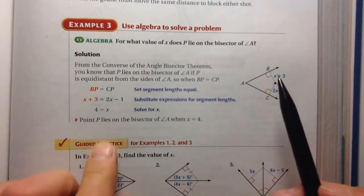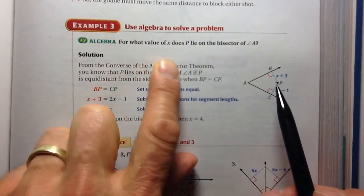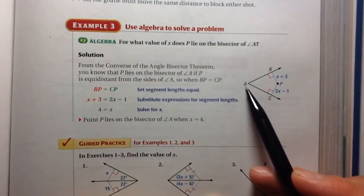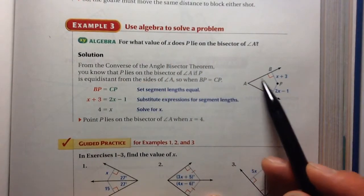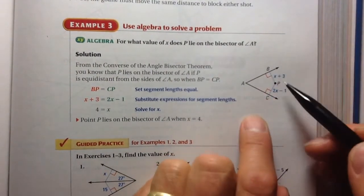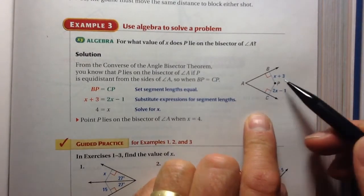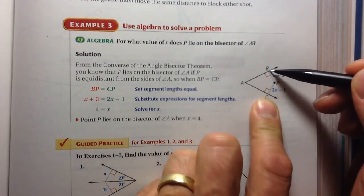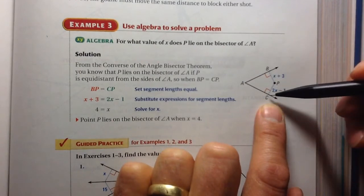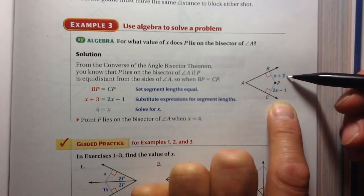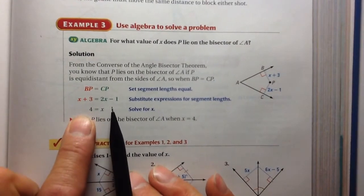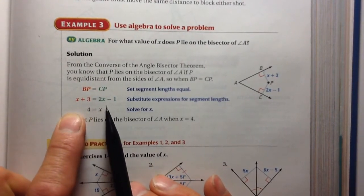Example number 3. They are asking for what value of x does this point P lie on the bisector of angle A. So here's your larger angle A. And in order to get P to be equidistant... well, first of all, in order to get it on the angle bisector, it needs to be equidistant from the sides. And these are perpendicular distances. That's cool. So in other words, these two segments have to be congruent. If they were congruent, then they would have the same length. So therefore I can set these two segment lengths equal to each other, which is what they've done here.